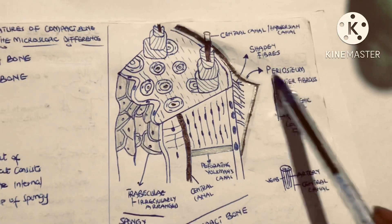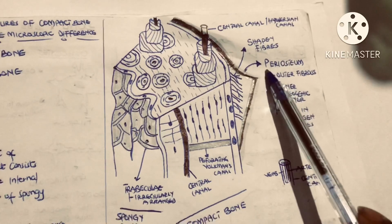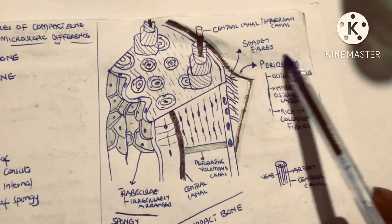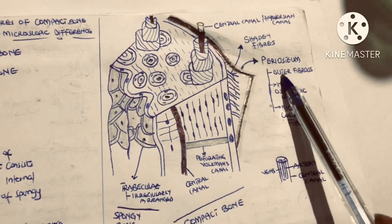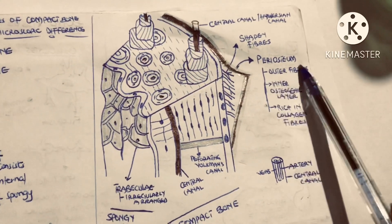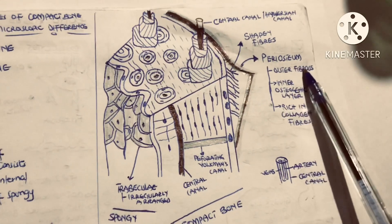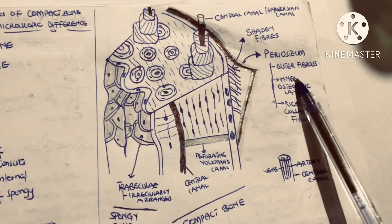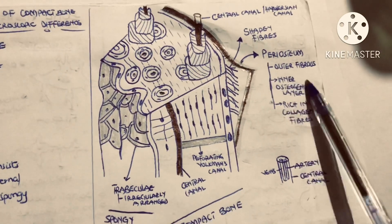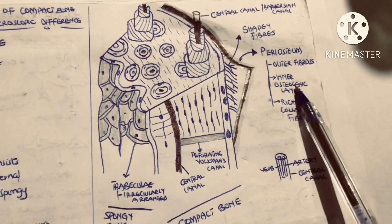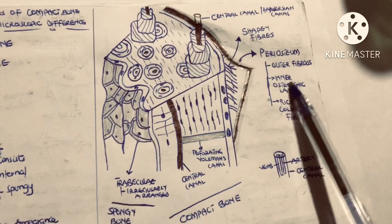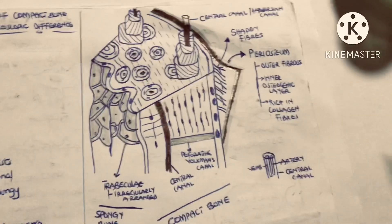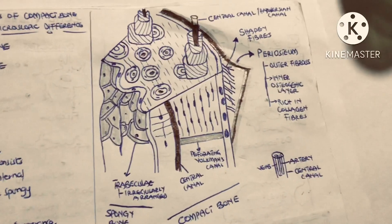The compact bone is further lined by a structure called the periosteum. One thing about the periosteum is that it is double-layered — it contains an outer fibrous layer and an inner osteogenic layer, and the inner osteogenic layer is lined by osteogenic cells.